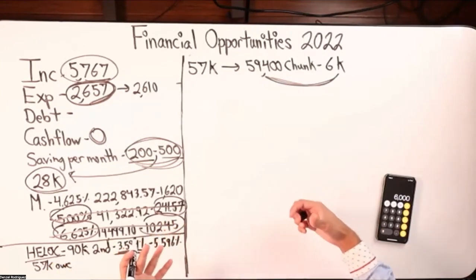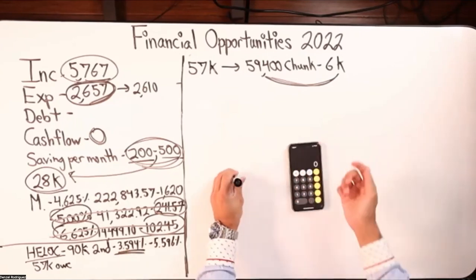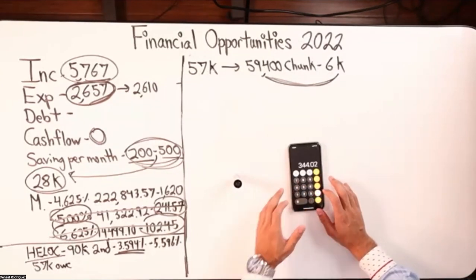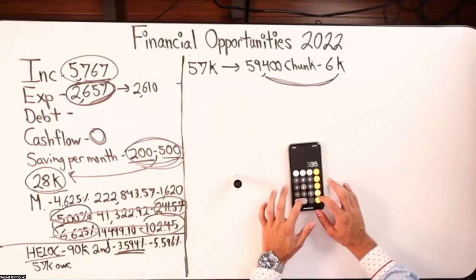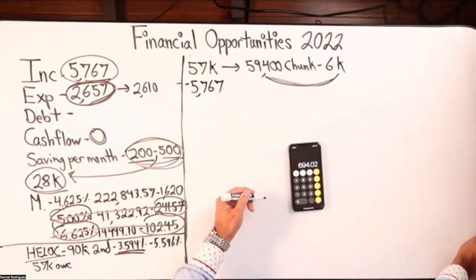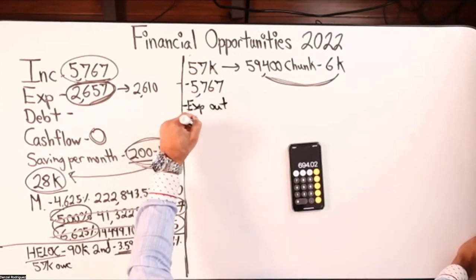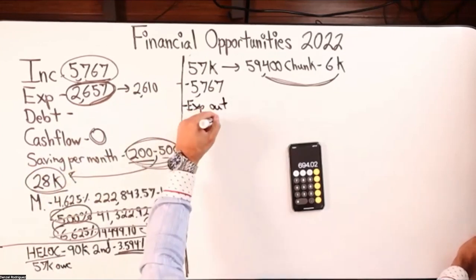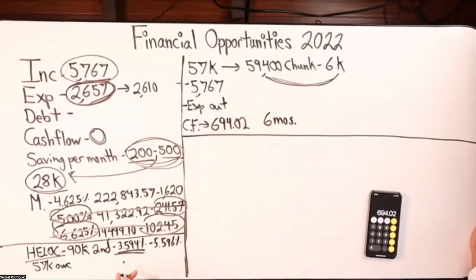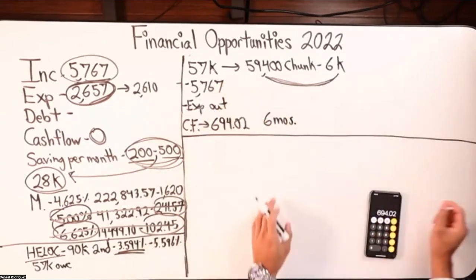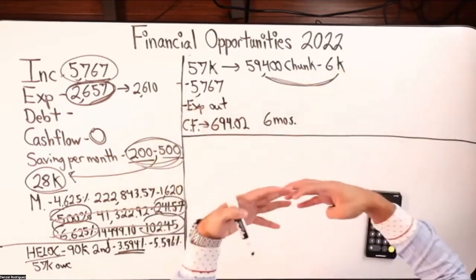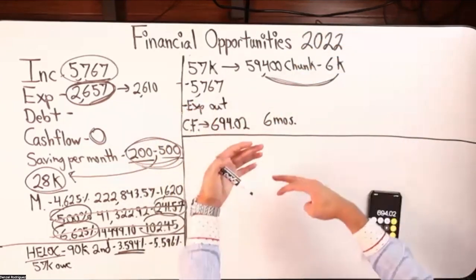We need to take advantage of this rate for as long as possible. What the bank has done is consolidate those two high-rate portions into this HELOC, and now your $102.45 and $241.57 payments are coming into the line of credit — which instantly becomes cash flow. So technically income of $5,767 goes in each month, expenses come out, and your net cash flow staying in the HELOC is going to be around $694.